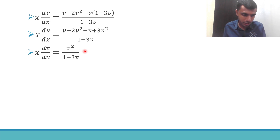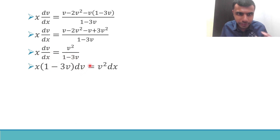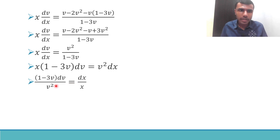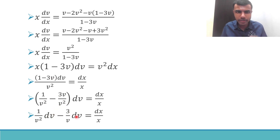Now I want to bring all v terms to one side and x terms to the other side. Cross-multiplying: x(1 minus 3v)dv equals v²dx. Sending v² to the LHS and x to the RHS, in the LHS I split: (1 minus 3v)/v² becomes 1/v² minus 3v/v², and the v's cancel to give (1/v² minus 3/v)dv equals dx/x.